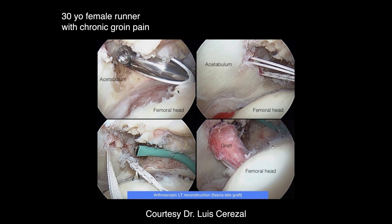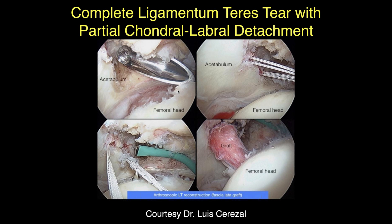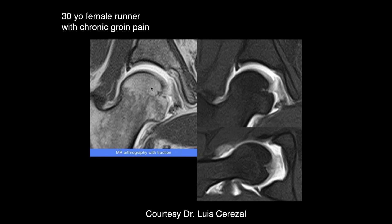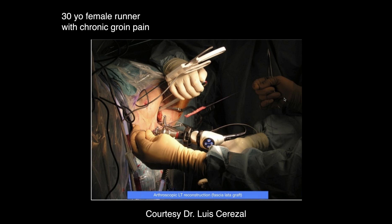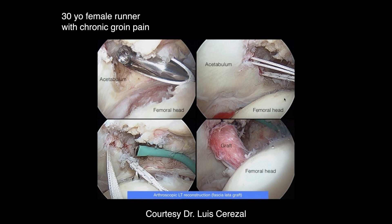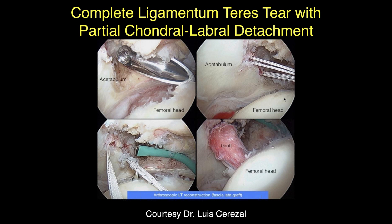A repair procedure with a graft was performed on the ligamentum teres. The chondrolabral changes were identified as possibly a partial detachment, though locally such findings are often called normal variants. The ligamentum teres graft reconstruction appears to be a procedure performed in Spain rather than commonly done in America.